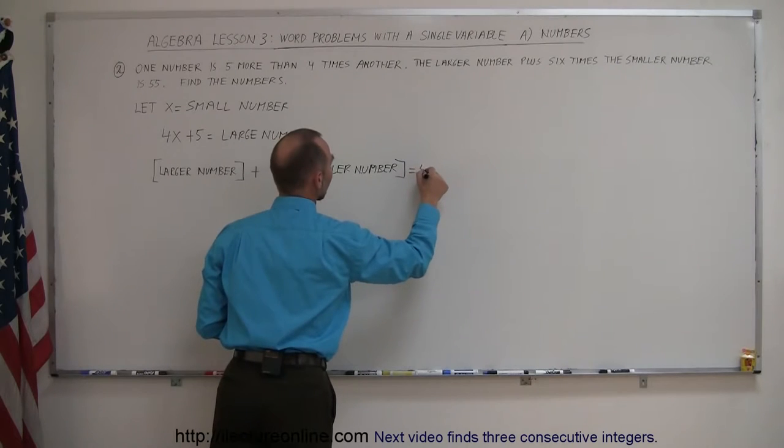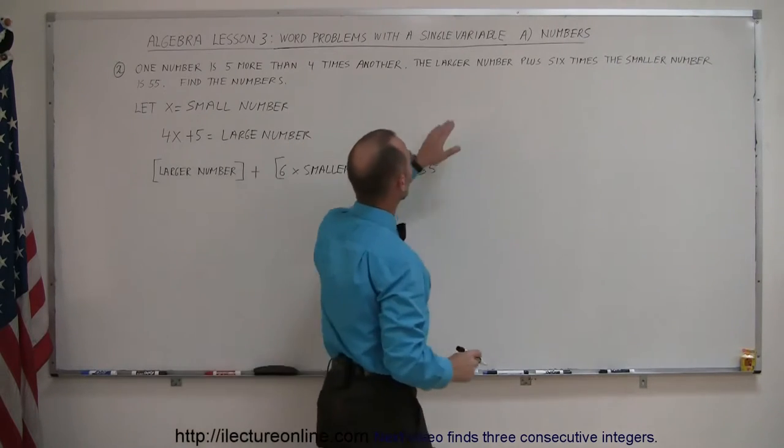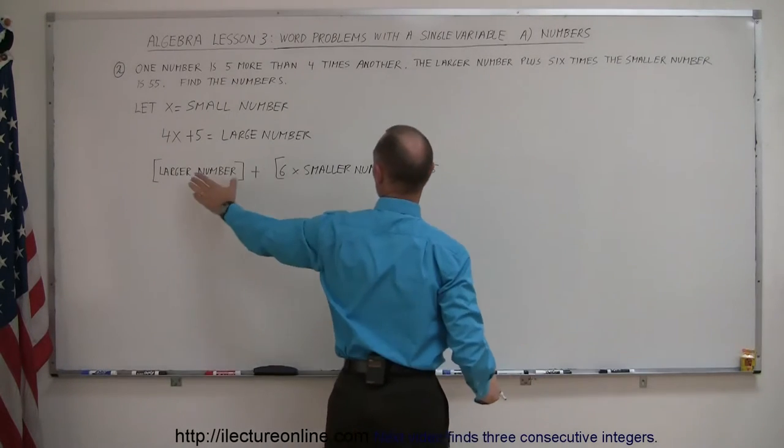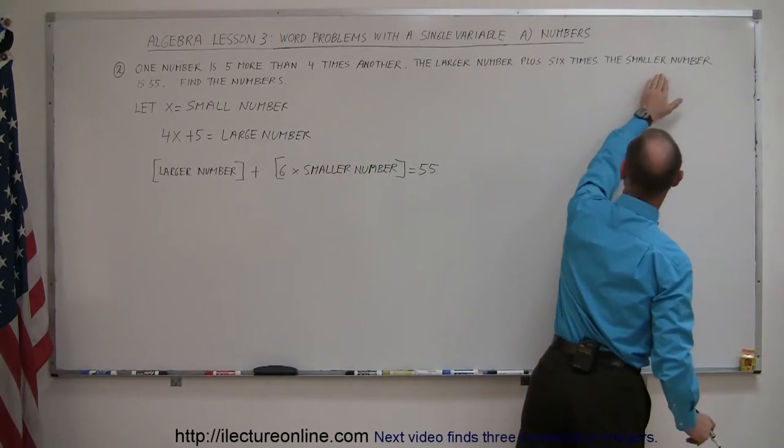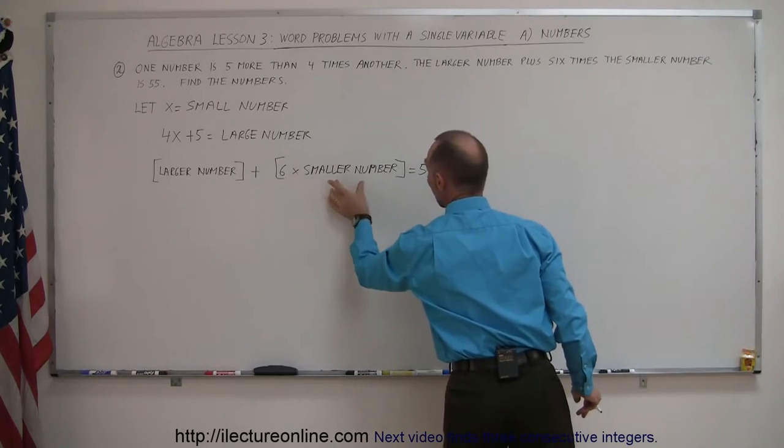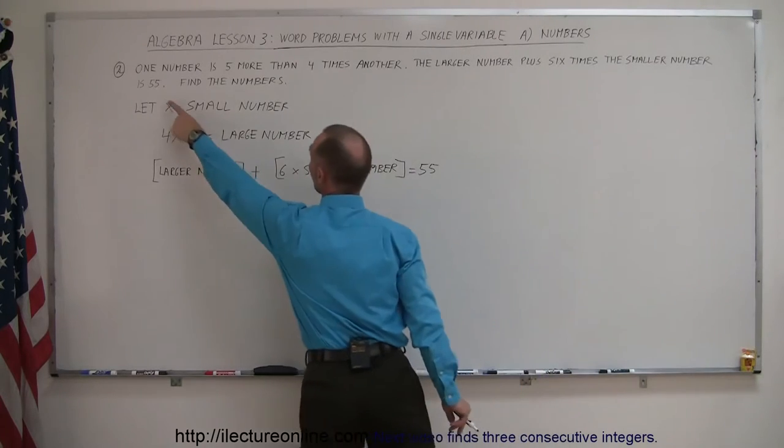That's exactly what it says here. The larger number, right here, plus six times the smaller number. Six times the smaller number equals 55.